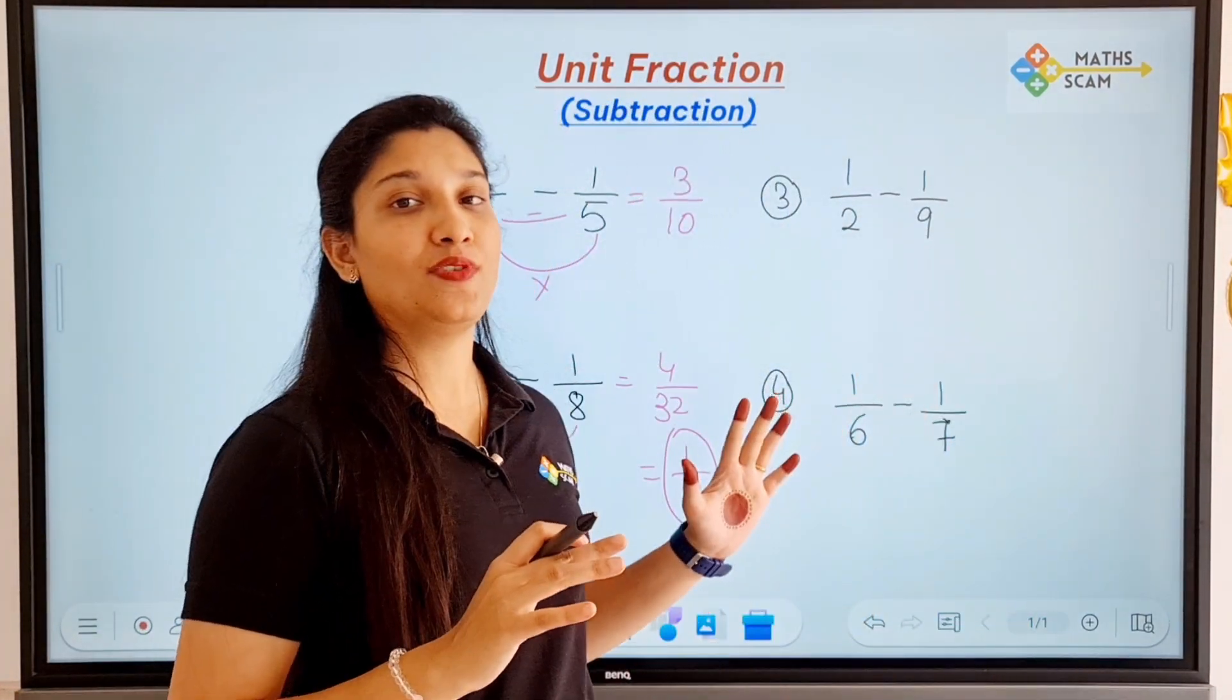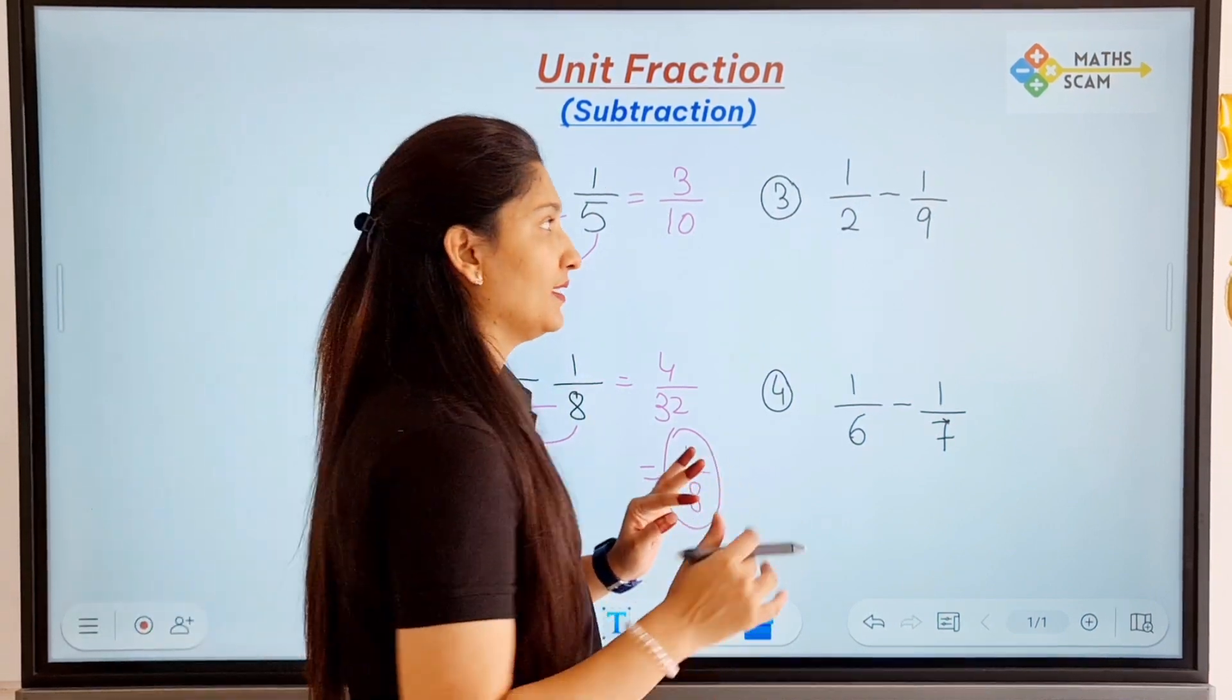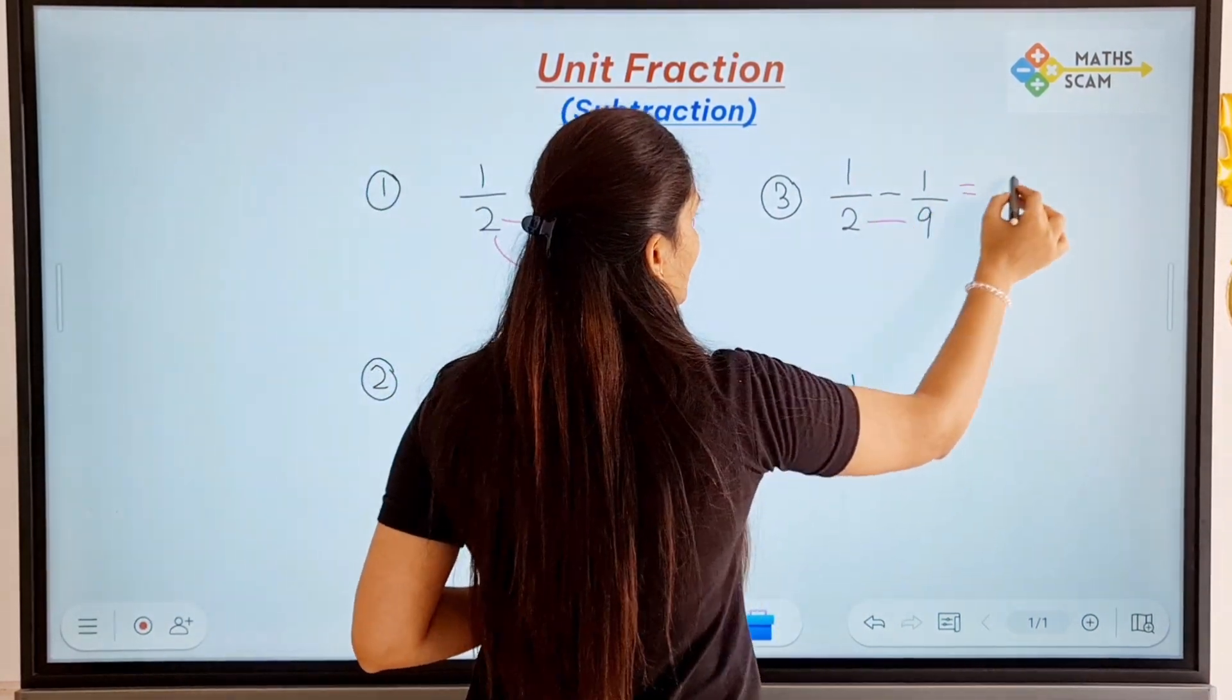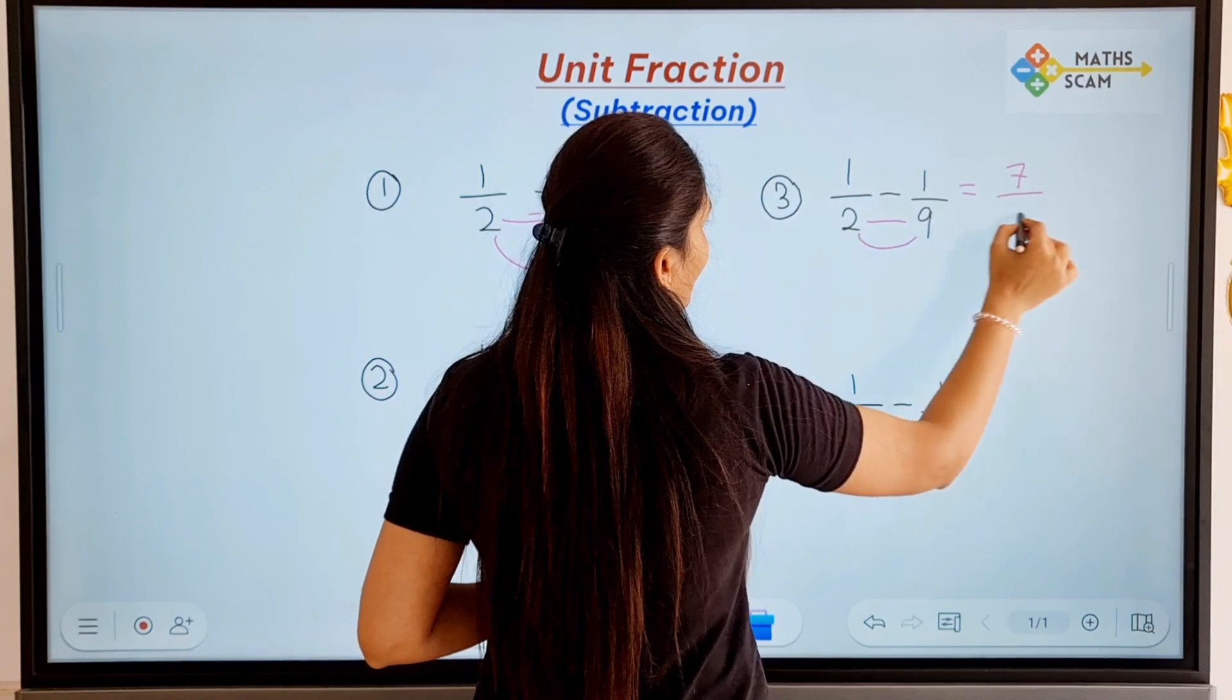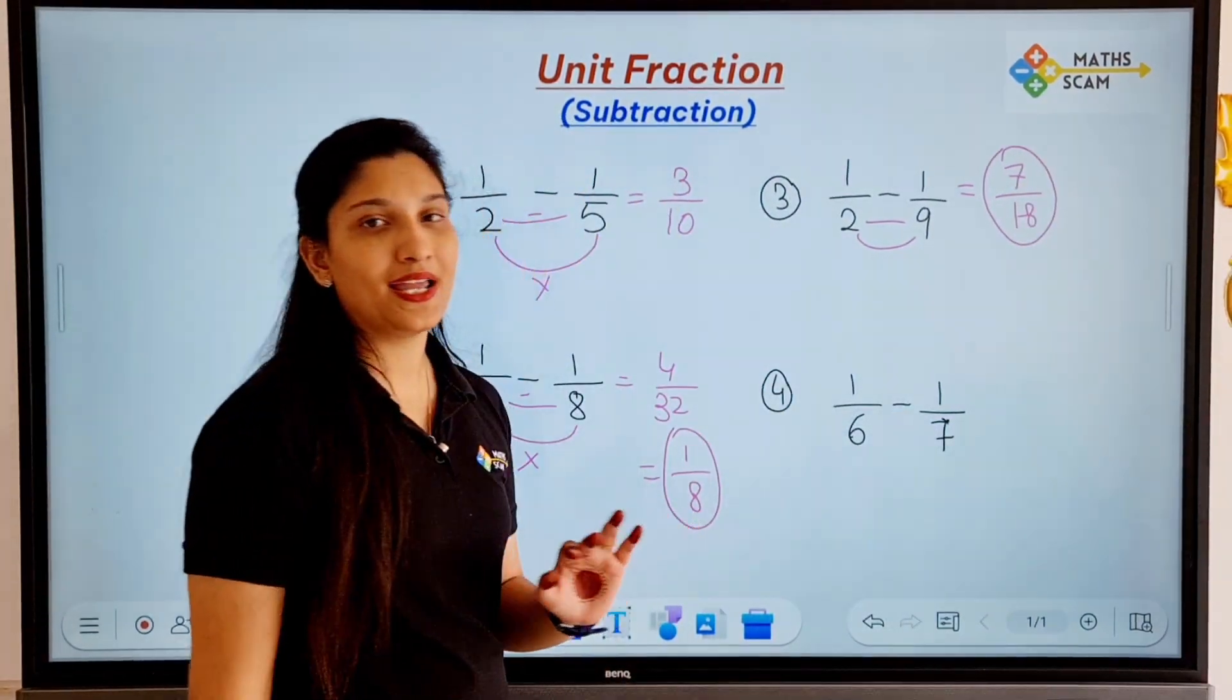Just do subtraction of denominators, multiplication of denominators. That's it. The next question is 9 minus 2 is 7, 9 times 2 is 18. Answer is 7 by 18.